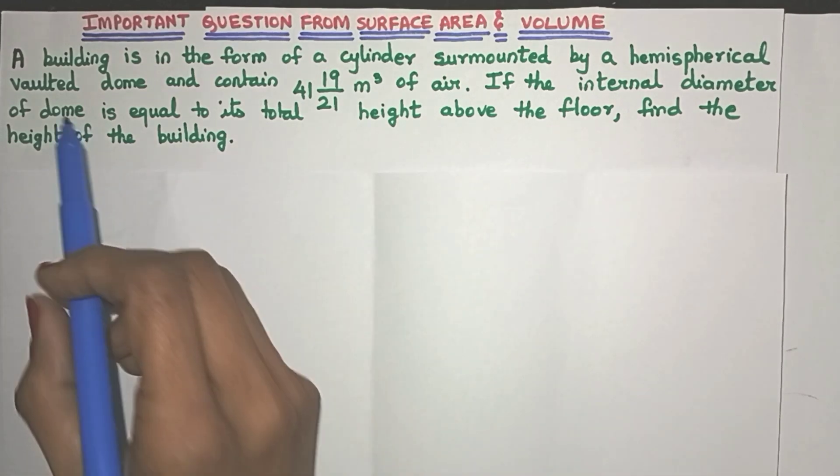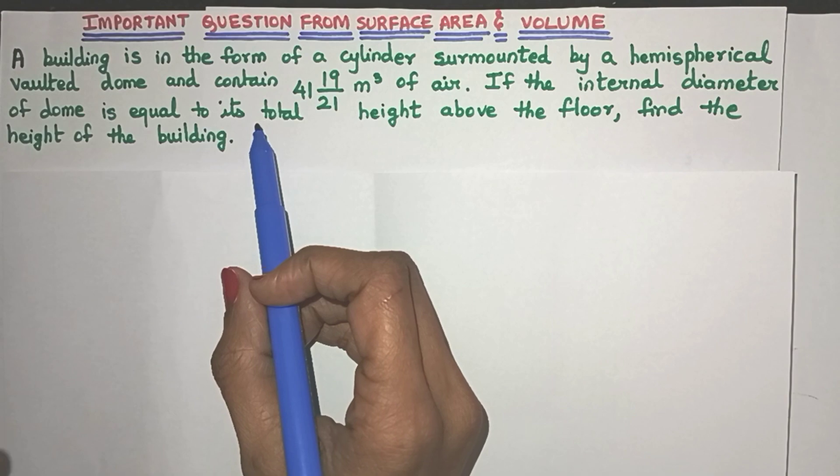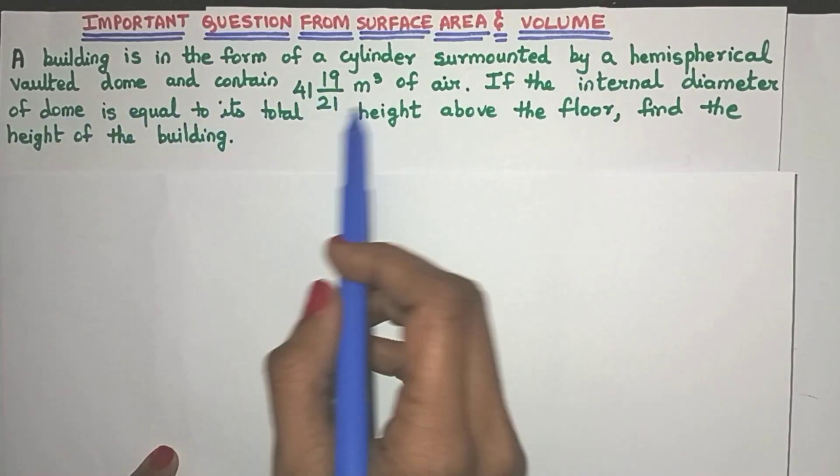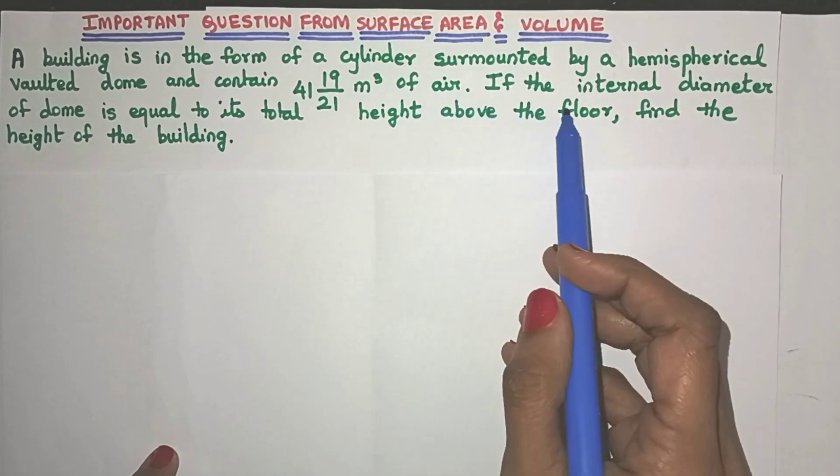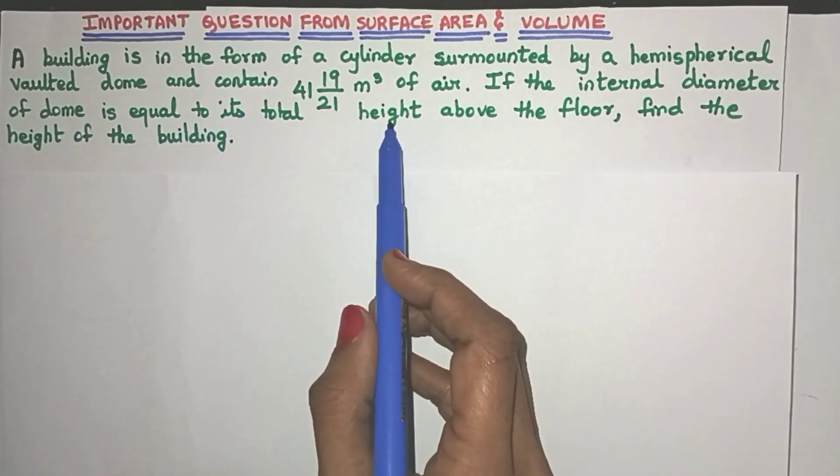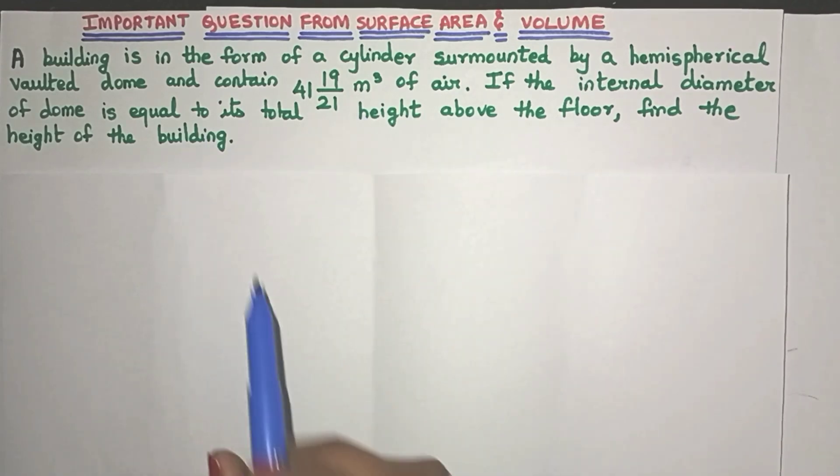So the question is: a building is in the form of a cylinder surmounted by a hemispherical vaulted dome and contains so much meter cube of air. If the internal diameter of the dome is equal to its total height above the floor, find the height of the building.